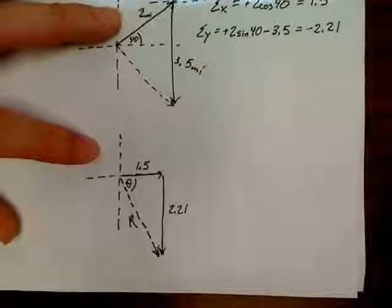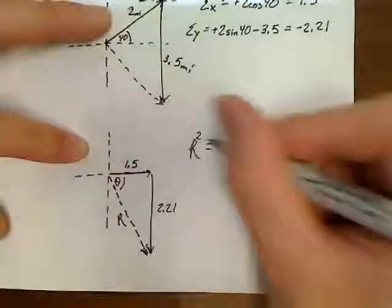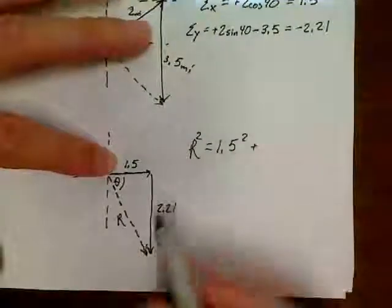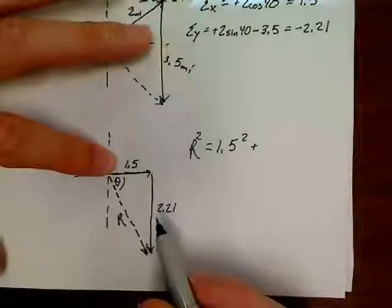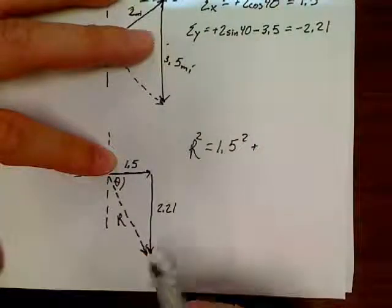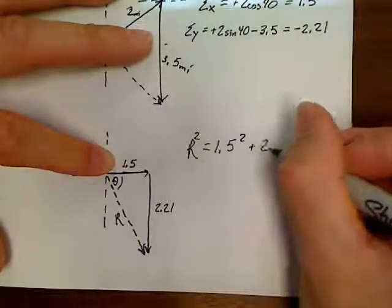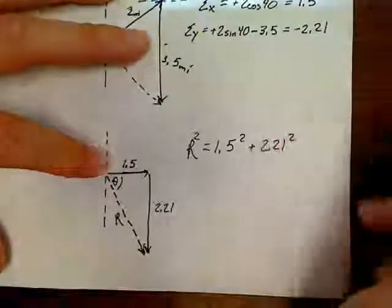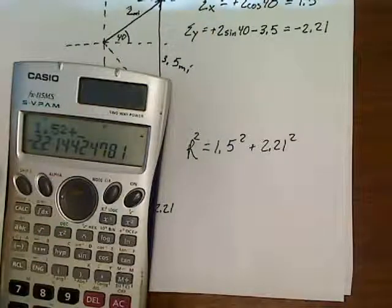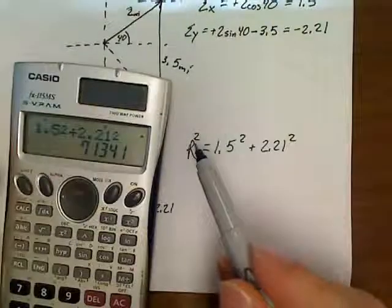If you look, we've made a nice little triangle. All we've got to do to find the resultant is Pythagorean. R squared is equal to 1.5 squared plus, now, I want you to notice something. I dropped the negative down here on the 2.21. The only thing the negative really was telling us in this problem was to proceed south. So, 2.21.